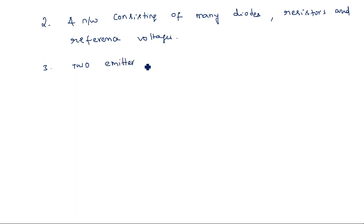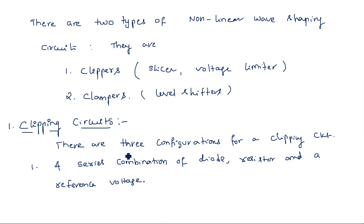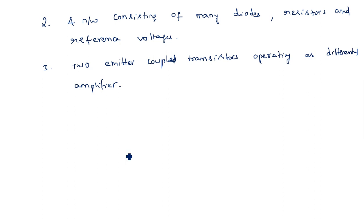The third configuration uses two emitter-coupled transistors operating as a differential amplifier. So the first case uses a single diode, resistor, and reference voltage to clip at the positive or negative peak. The second case handles multi-level clipping at both peaks. The third case uses transistors — specifically two emitter-coupled transistors — instead of a diode. Now let us start the concept of diode clippers.